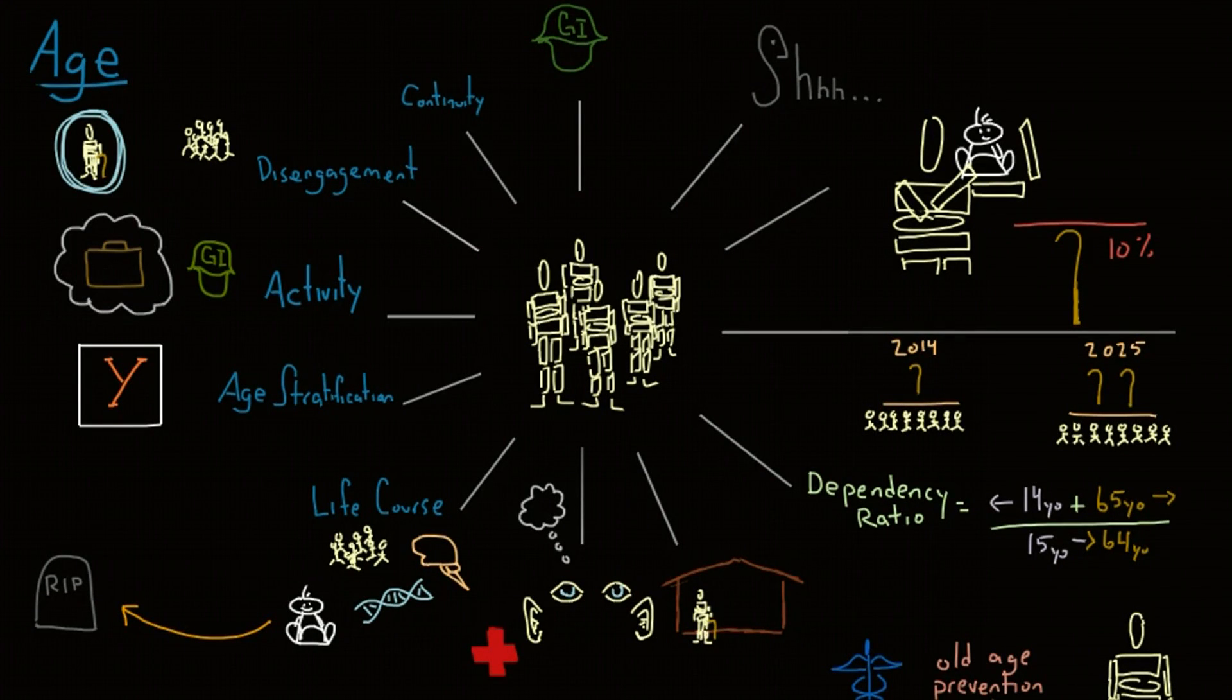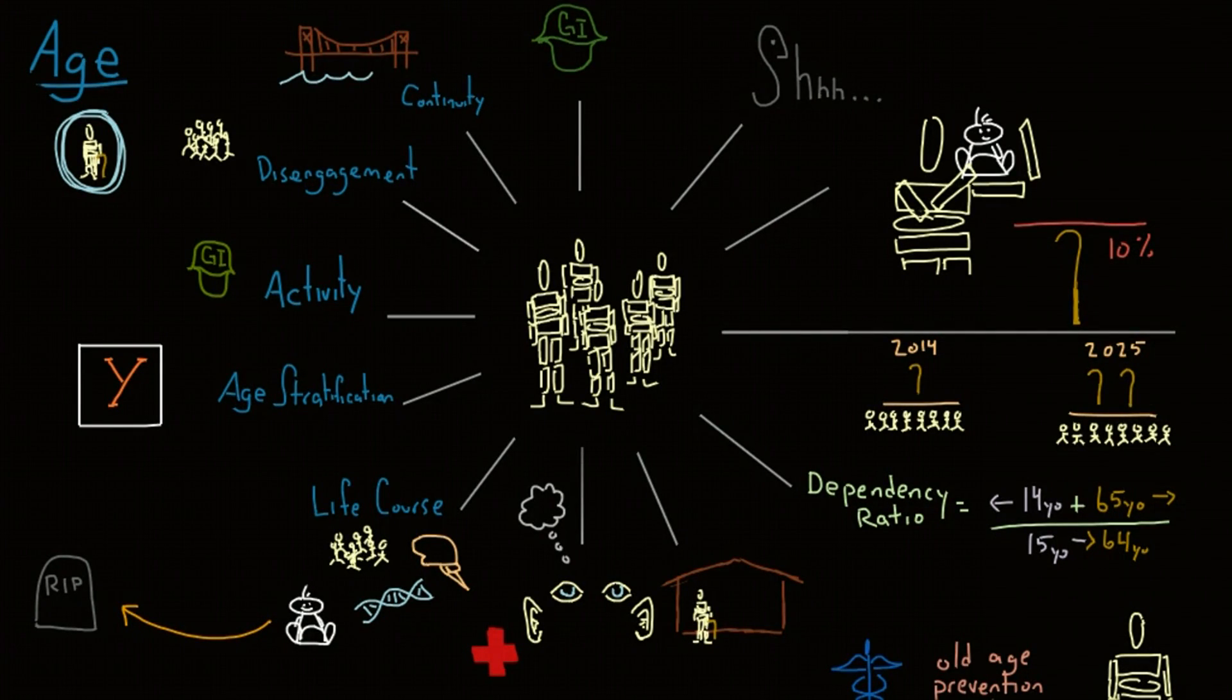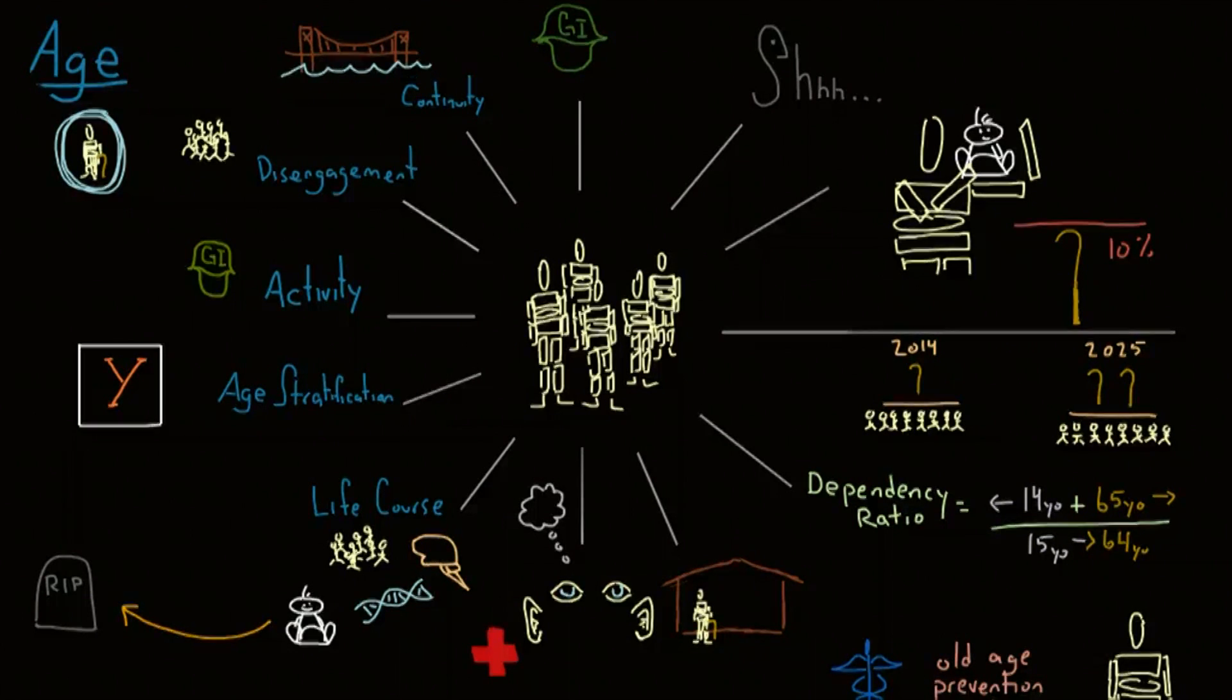Continuity theory suggests that people try to maintain the same basic structure for their lives over time. As people age, they make decisions that preserve that basic structure and use it to adapt to the external changes of society and the internal changes of aging.